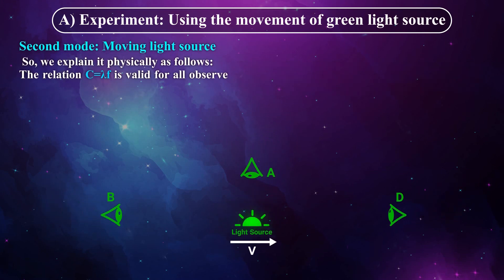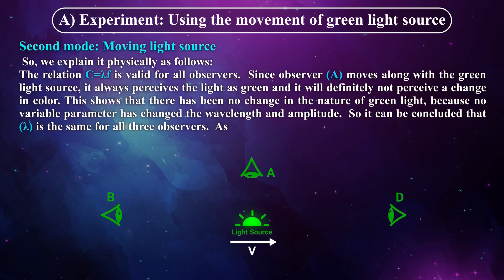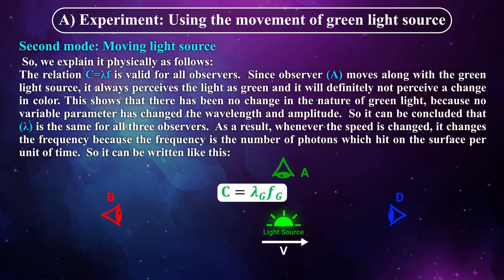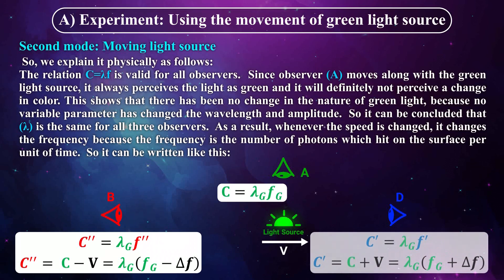So we explain it physically as follows. The relation C equals lambda F is valid for all observers. Since observer A moves along with the green light source, it always perceives the light as green and it will definitely not perceive a change in color. This shows that there has been no change in the nature of green light because no variable parameter has changed the wavelength and amplitude. So it can be concluded that lambda is the same for all three observers. As a result, whenever the speed is changed, it changes the frequency because the frequency is the number of photons which hit on the surface per unit of time.